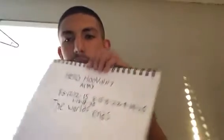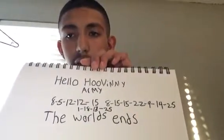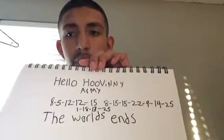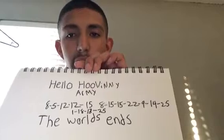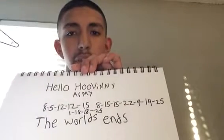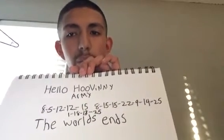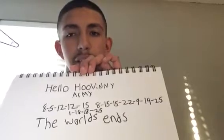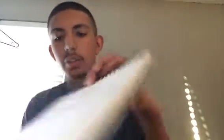So, you should have something like this: 8, 5, 12, 12, 15, 8, 15, 15, 22, 9, 14, 25, 1, 18, 13, 25.